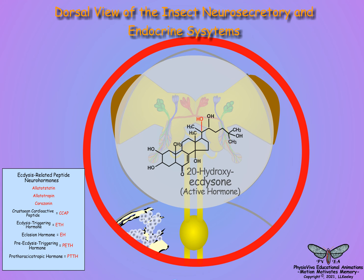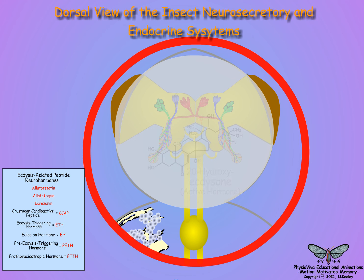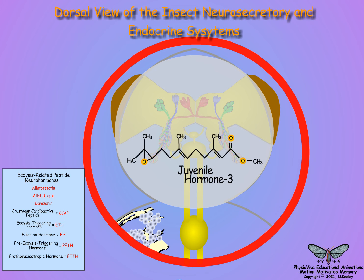If the molt is a larval-larval or larval-pupal molt, juvenile hormone is present and prevents adult metamorphosis. Juvenile hormone synthesis and secretion are regulated in many insect species by allatotropic and allatostatic factors from multiple endocrine sources.